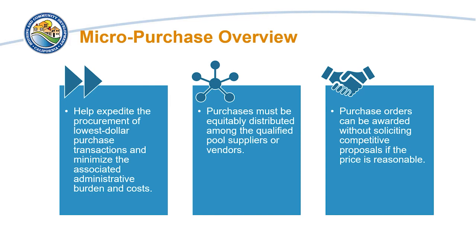Micropurchases help expedite the procurement of lowest-dollar small purchase transactions and minimize the associated administrative burden and cost by allowing for a pool of vendors to be preselected for future recurring purchases of predetermined items. Purchases must be equitably distributed among the qualified pool of suppliers or vendors, and contracts and purchase orders can be awarded without soliciting competitive proposals if the price is determined to be reasonable based on research, experience, purchase history, or other information that is documented. The determination of cost reasonableness for each micropurchase must be documented.